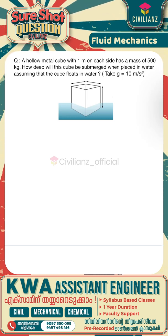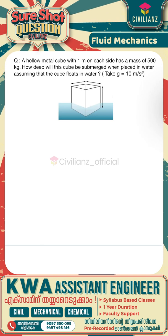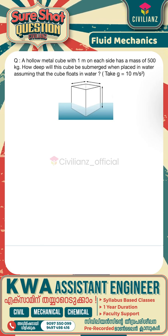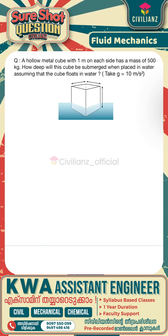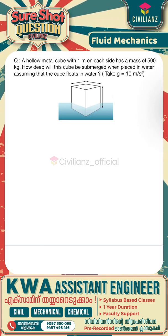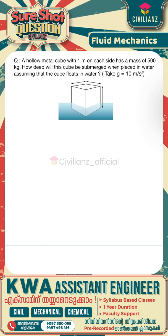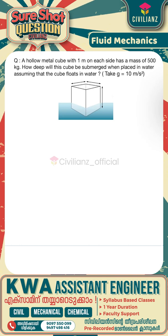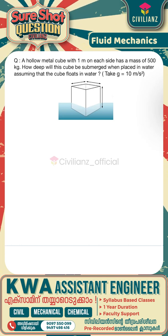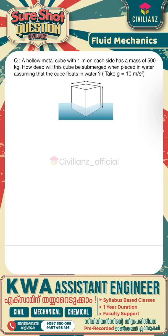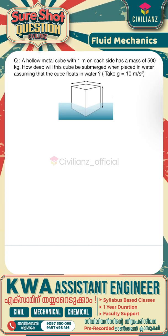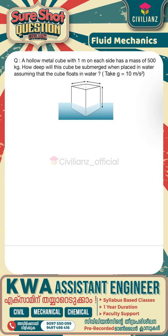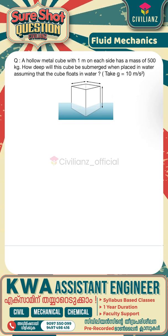A hollow metal cube with 1 meter on each side has a mass of 500 kg. How deep will this cube be submerged when placed in water, assuming that the cube floats in water?